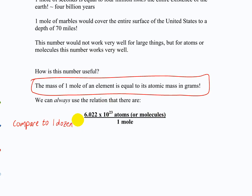There are that many atoms or molecules in one mole. One mole contains that many. That's the identity we can put into the dimensional analysis to convert things between moles and atoms. Now let's go back to that statement and look at the rest of it: the mass of one mole of an element is equal to its atomic mass in grams.